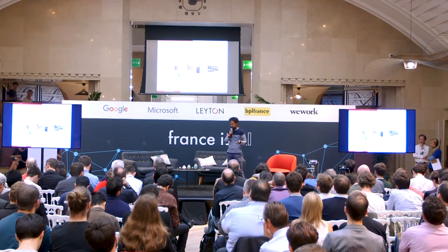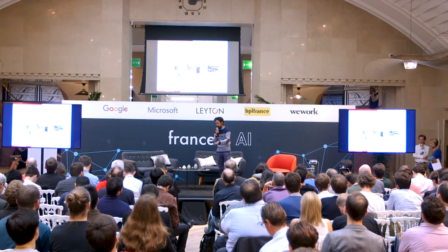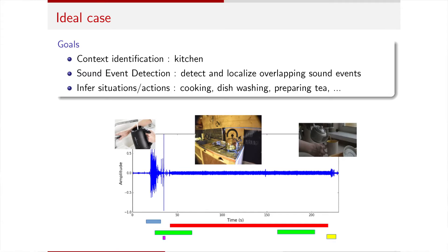For example, the ultimate goal would be: given an audio signal and some action, we want to recognize that the action happened in a kitchen, and identify specific events like the water tap running, filling the kettle, water boiling, and then someone preparing tea. From this collection of events and reasoning about them, we want to infer some high-level action or situation.